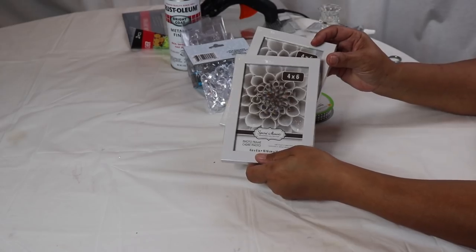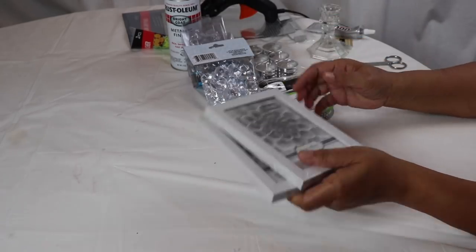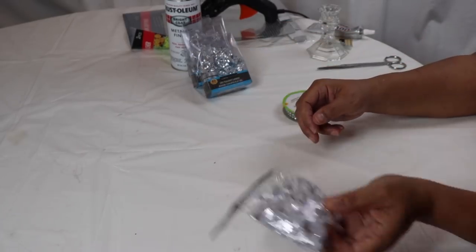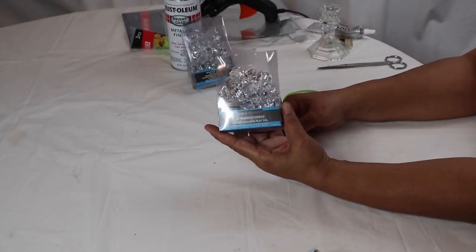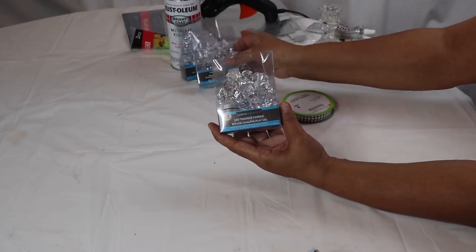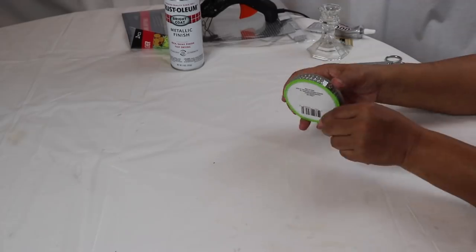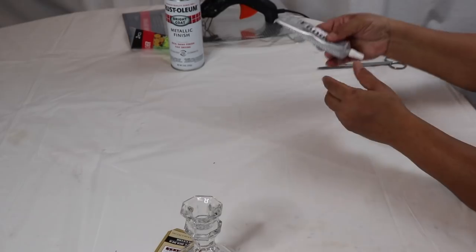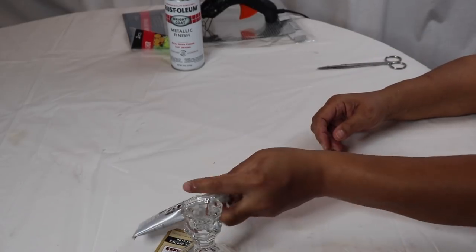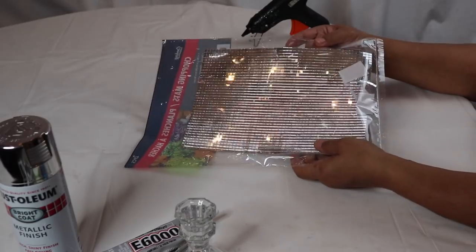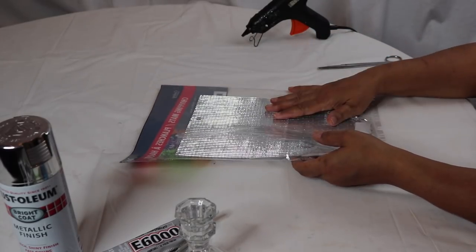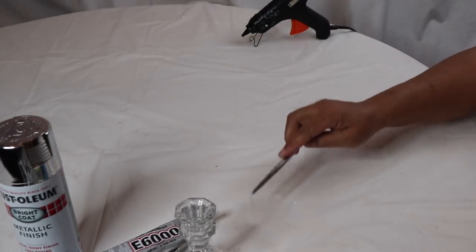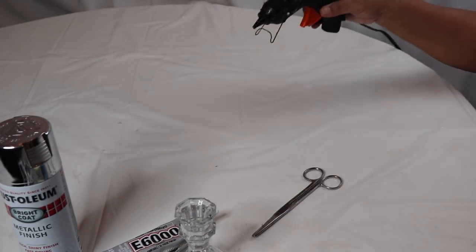Starting out we'll be using two of the Dollar Tree 4x6 picture frames, some Dollar Tree napkin rings, some acrylic diamonds or you can use the little gems that come in this pack and that's what I'll be using today. I'm actually going to use three packs. Some diamond wrap, a candle holder, some type of strong glue, some silver spray paint, some mirror tiles or you can use some diamond wrap for this as well, some scissors, and some hot glue.